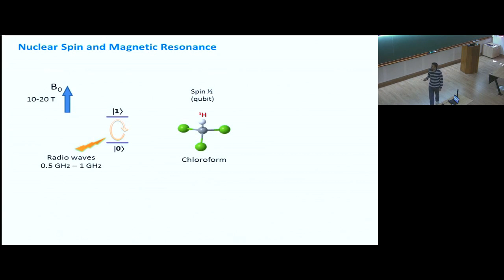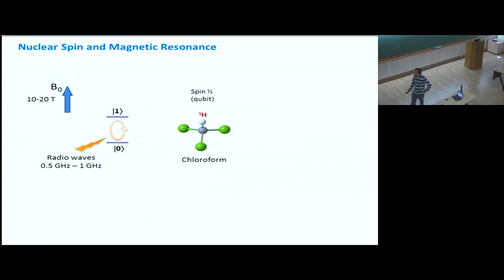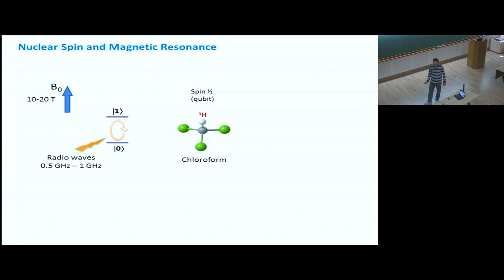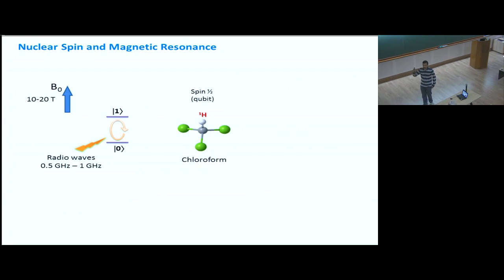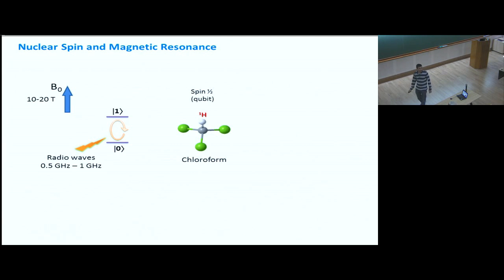As a brief introduction, consider a molecule like chloroform — it has hydrogen, carbon, and three chlorines. We talk about the nuclear spin inside this hydrogen atom, which is a proton. It is a spin-half particle, and we call it a qubit in quantum information language. If you place this molecule in a magnetic field, it becomes a two-level system: the spin can be parallel or anti-parallel to the field, giving two energy levels. For fields of the order of 10 to 20 tesla, the energy gap corresponds to frequencies in the 0.5 to 1 gigahertz range — the radio wave range.